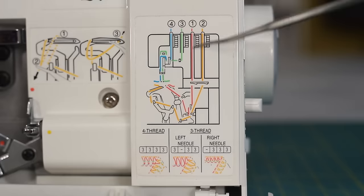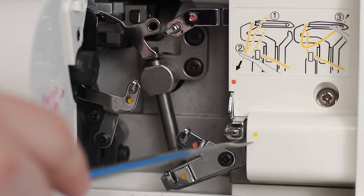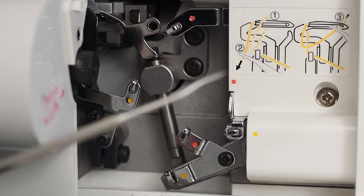So your machine should have some onboard threading diagram to help you thread your machine. The idea is to follow these color-coded lines, which continue with the colored dots.